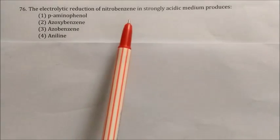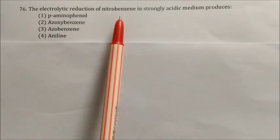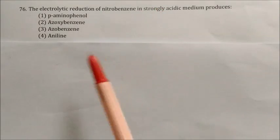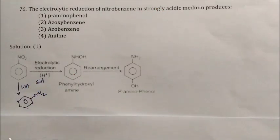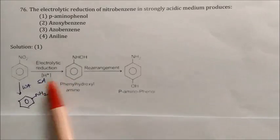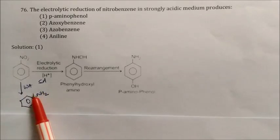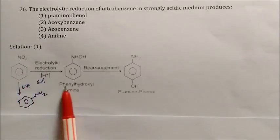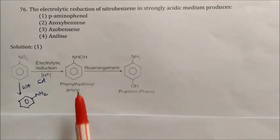Question: The electrolytic reduction of nitrobenzene in a strongly acidic medium produces what? Nitrobenzene can undergo two types of reactions depending on the medium. In weak acid, it forms aniline. But in strong acid, it undergoes reduction to form phenylhydroxylamine first, which then undergoes rearrangement to form para-aminophenol.